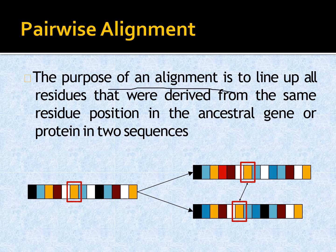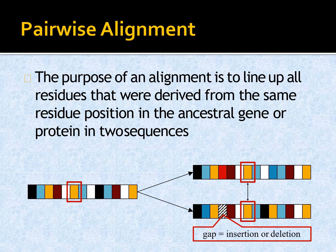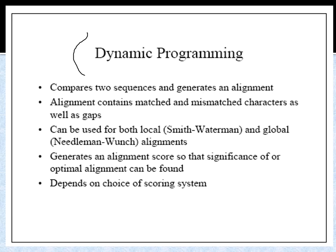The purpose of pairwise alignment is to line up all the residues that were derived from the same residue position in the ancestral gene or protein in two sequences. These two sequences are derived from an ancestral sequence, and we align them to get a sequence score using global and local alignment methods.